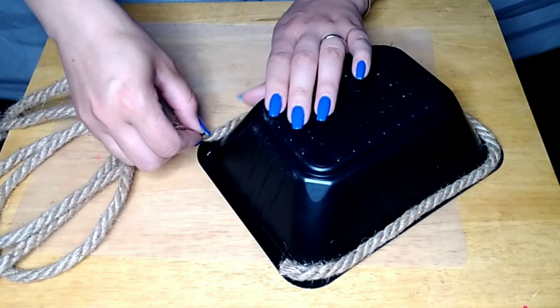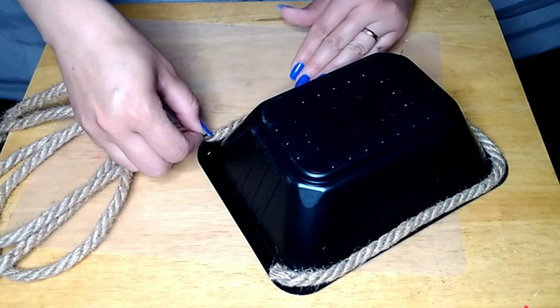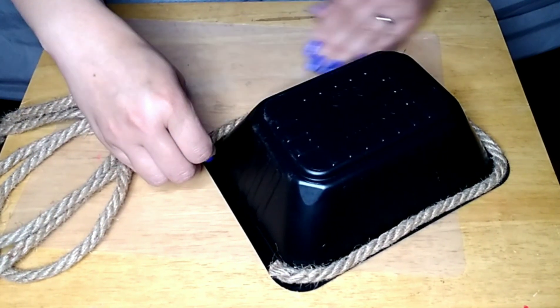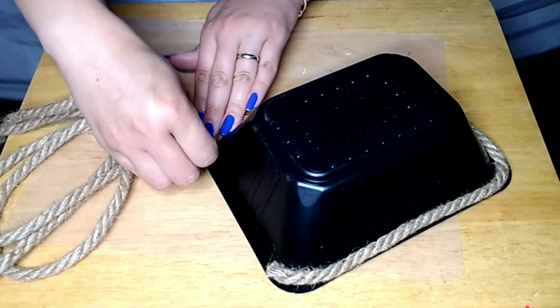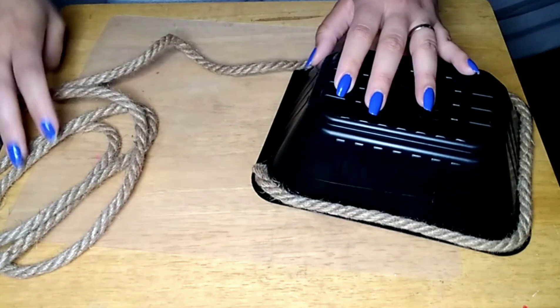And that's all I use. If you feel the need to, you can use some E6000 or some crazy glue, but I don't think it's going to be necessary. So I'm just going to go ahead, go around that whole top lip.